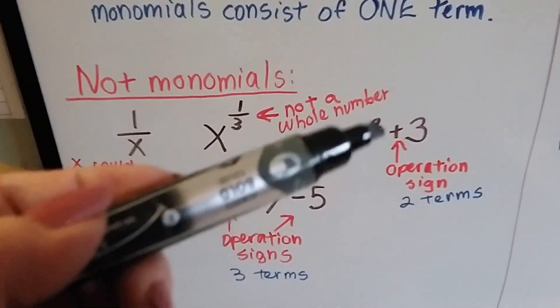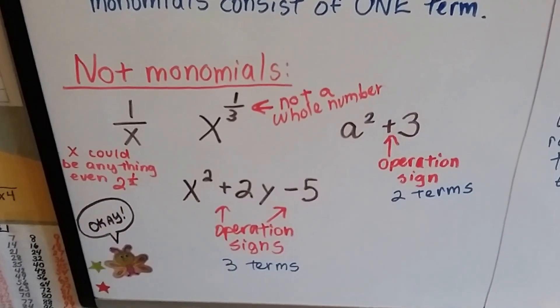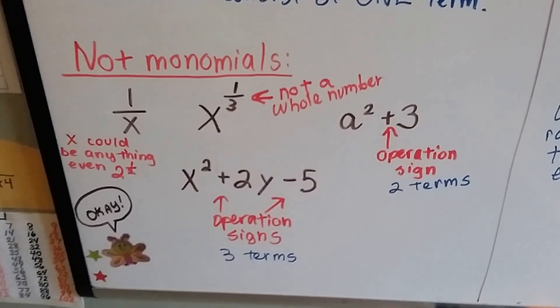A squared plus 3, there's an operation sign. There's two terms here. That's not a monomial. Monomial is only one term.